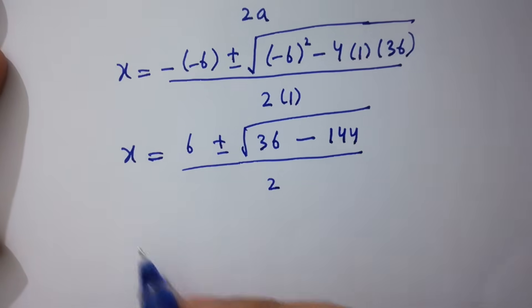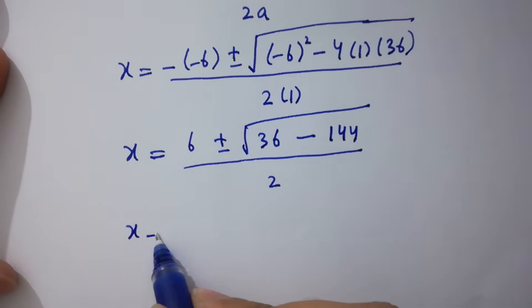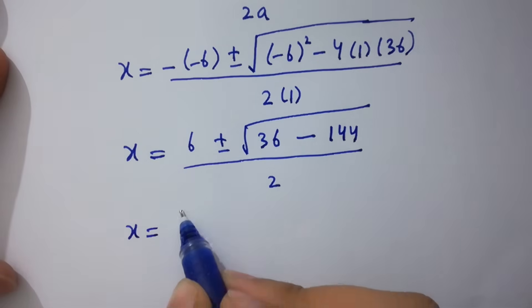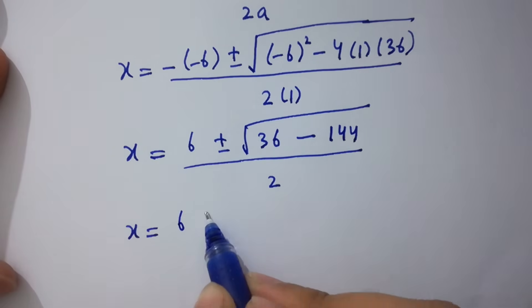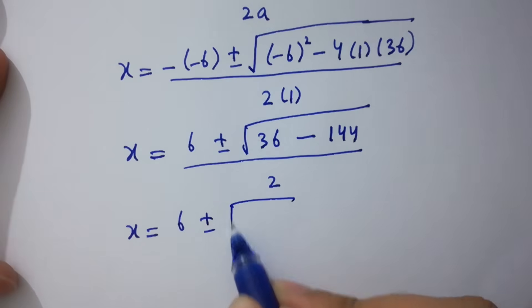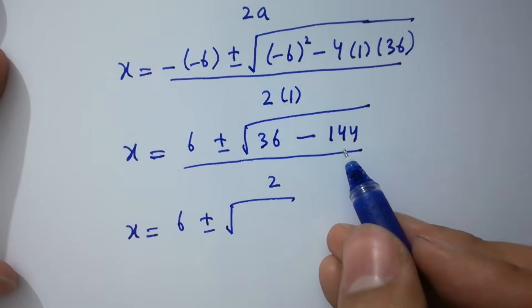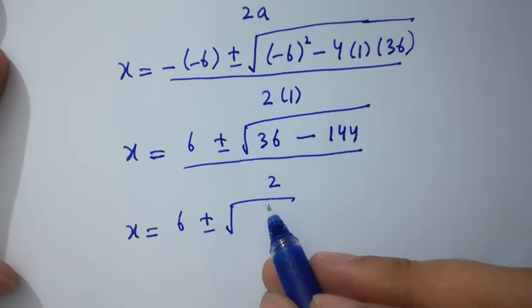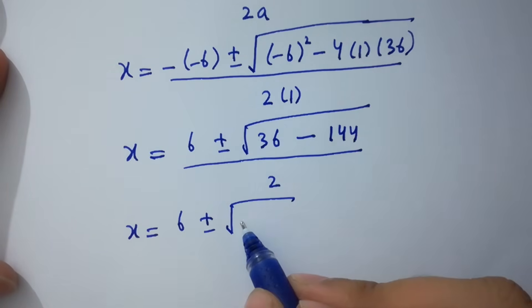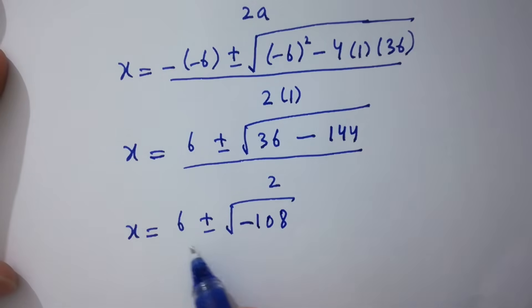So x equals 6 plus or minus the square root of 36 minus 144, which gives the square root of negative 108, all over 2.